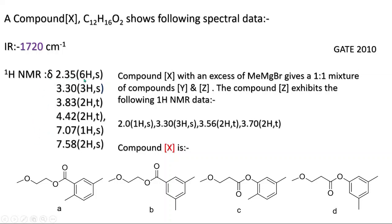We have δ 2.35, 6H singlet. The six hydrogens must be in a symmetrical environment. If you see the first molecule, there are two methyl groups of three hydrogens each, making six total. However, one is adjacent to a carbonyl group and the other has a different environment — one carbon has two hydrogens and another has only one — so these are in different environments. This would give two separate 3H singlets, not one 6H singlet.